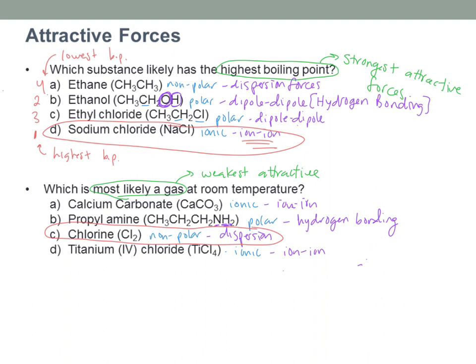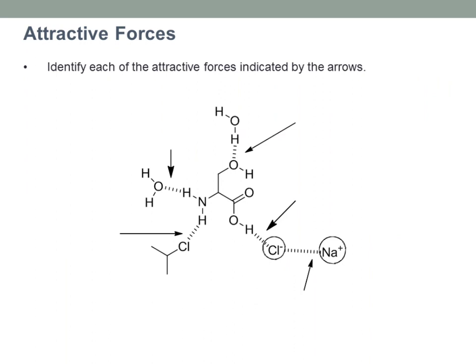That's how you apply attractive force concepts to predict physical properties like melting point and boiling point. Let's do one more example looking at molecules and individual particles to see what attractive force is taking effect. I want to know what attractive forces are being indicated by these arrows — these dotted lines. These dots are not bonds; they are just attractions between things. The bonds are the solid lines, and those dashed lines show partial charges attracting one another.